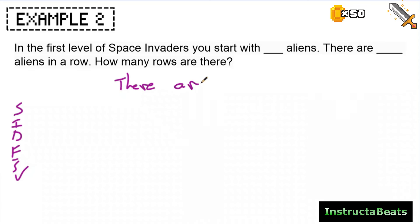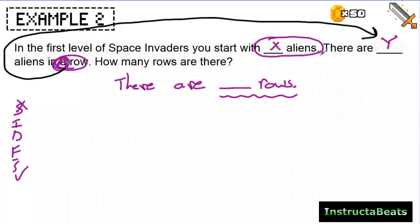My question said how many rows are there. I want to begin with the end in mind and say there are blank rows. So based on that, I know that I'm looking for any information about rows or what might be in rows. So in the first level of space invaders, you start with blank aliens. There are blank aliens in a row, which means I need to look for information about aliens. And I'm going to go ahead and just put an X for this alien and a Y right here. So now I know that you start with X aliens and there are going to be Y aliens in a row, or in other words, in each row.